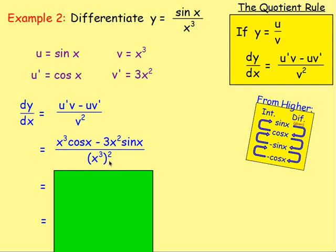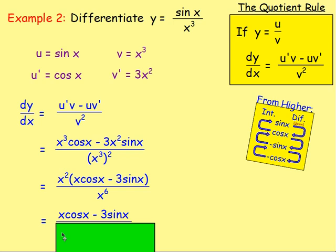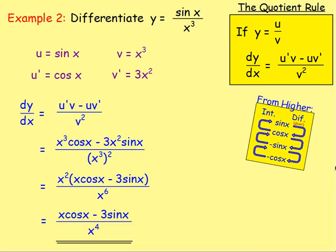From there, on the top you can take out a common factor of x². You've got x cubed (which is x² times x) and x squared. So take out x²: x²(x cos x − 3 sin x). On the bottom, x³ squared: 3 times 2 gives 6, so x to the power of 6. You can then cancel out an x² from top and bottom, leaving x cos x minus 3 sin x over x to the power of 4. That is your answer.